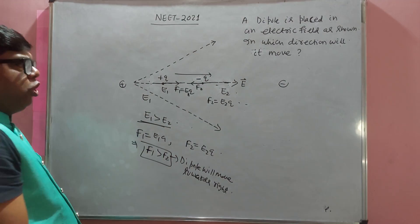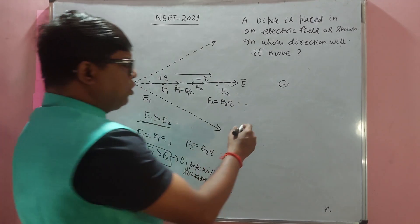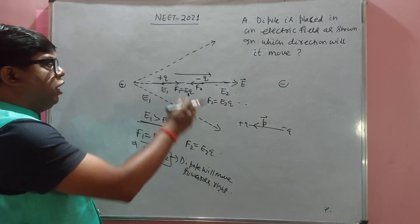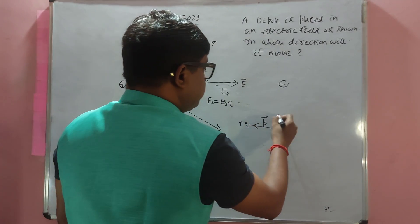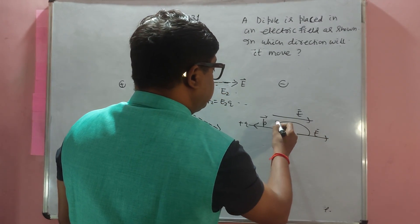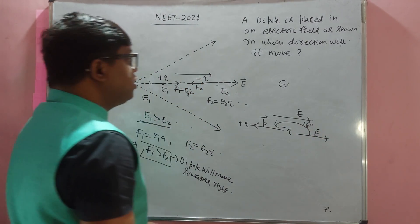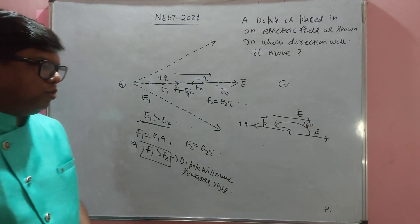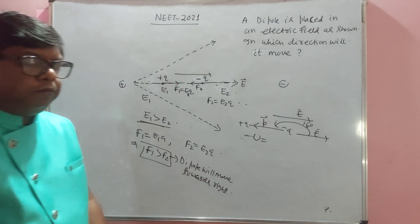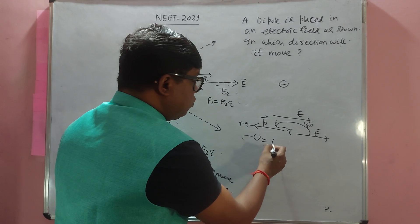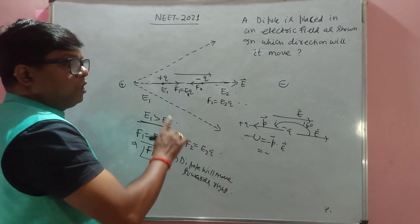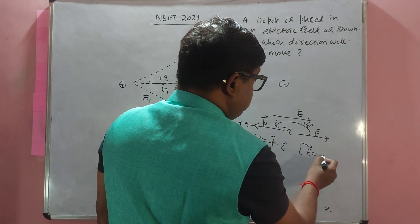The next question is: does the dipole move from higher potential to lower potential? Consider the dipole with minus q and plus q charges and dipole moment p. The electric field is in the direction of p at 180 degrees to the dipole. The potential energy when the dipole is placed in the electric field is U = −p·E, where E is the net electric field, which equals e1 plus e2.